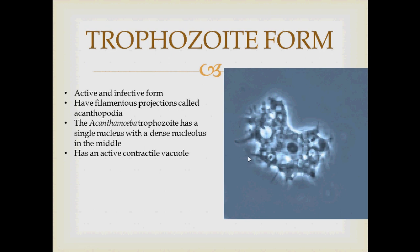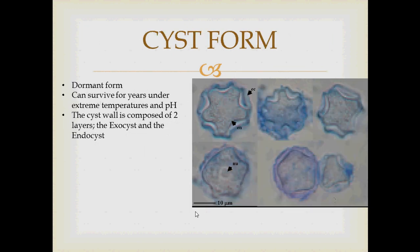Since the cytoplasm of a cell generally has a salt concentration of 0.89 percent, and since Acanthamoeba lives in fresh water, the fresh water is hypotonic to its cytoplasm. Fresh water continuously seeps into the cell via osmosis, so the contractile vacuole collects this water and expels it, preventing the cell from lysing.